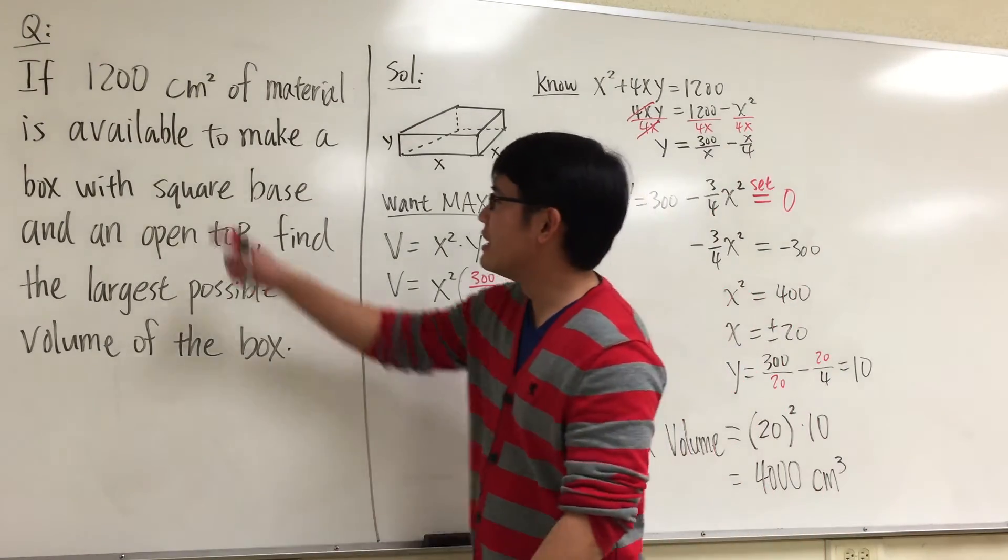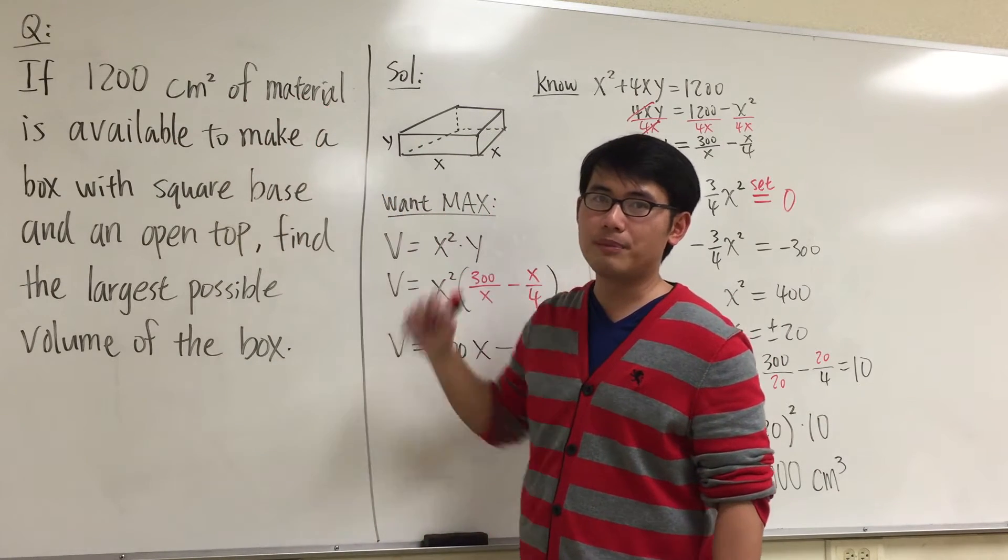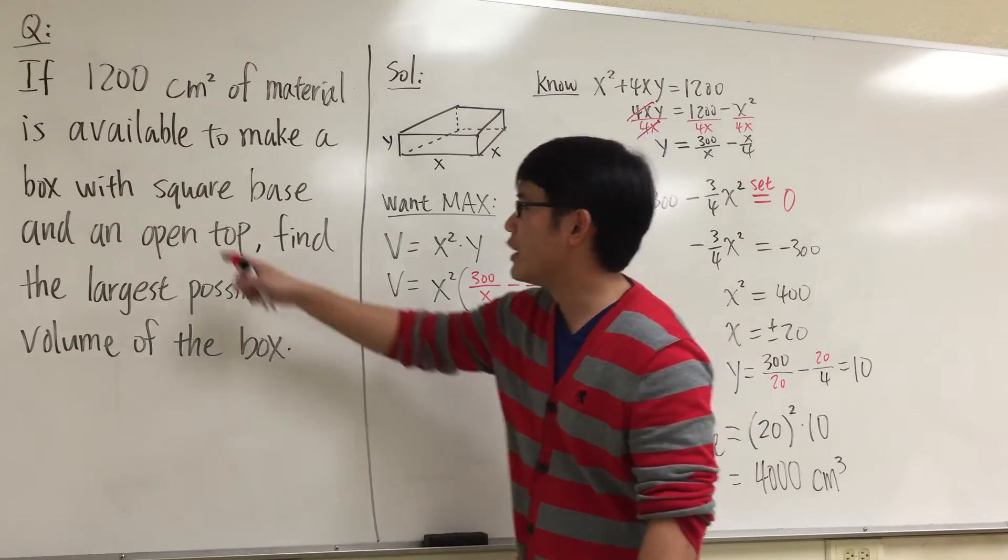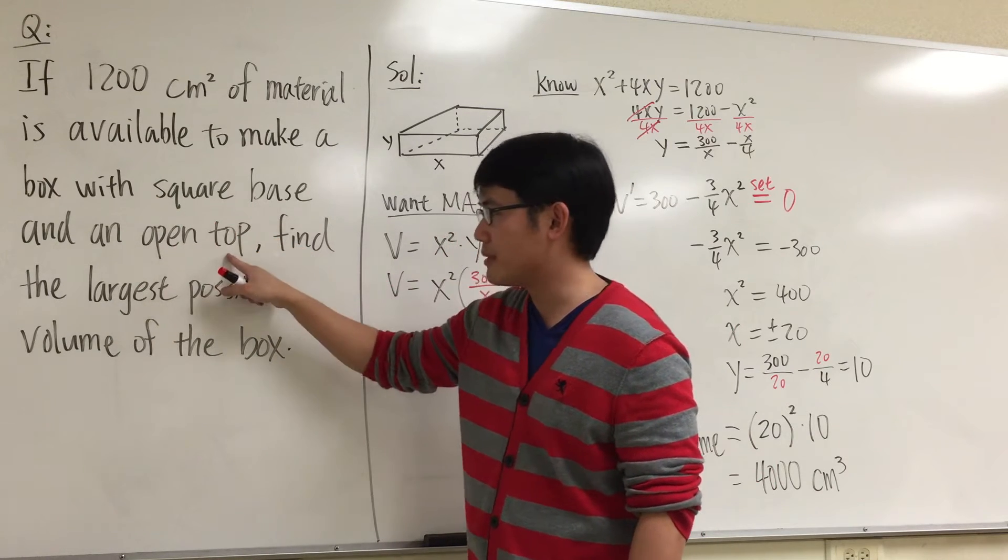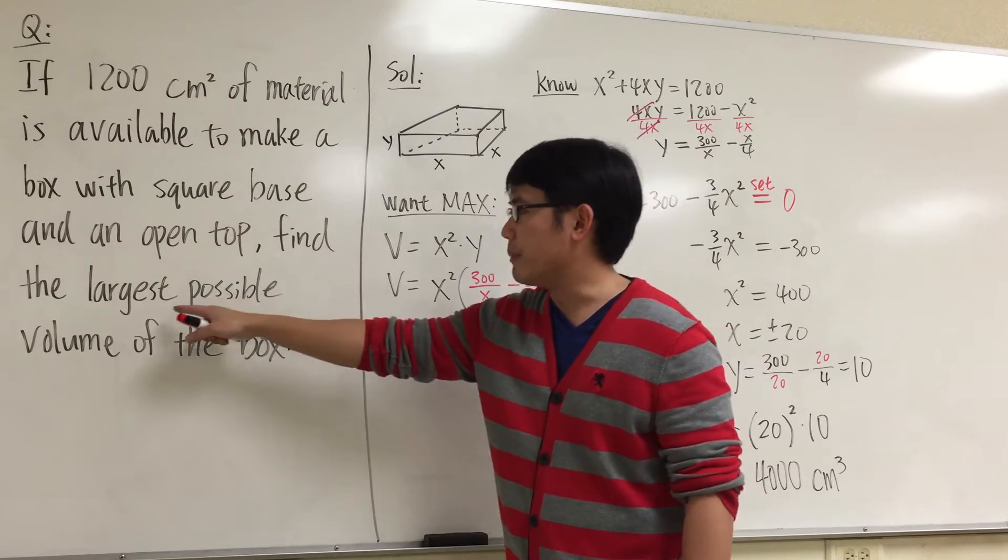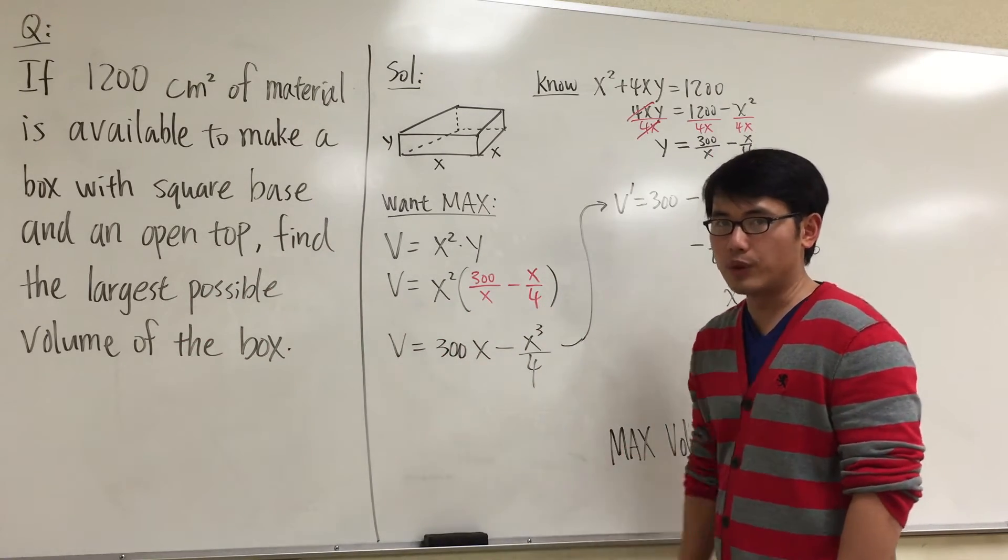Let's take a look at this question. If 1200 cm² of material is available for us to make a box with a square base and an open top, we'll try to find the biggest possible volume of the box that we can have. So this is how we do it.